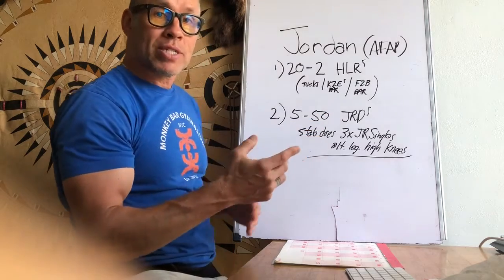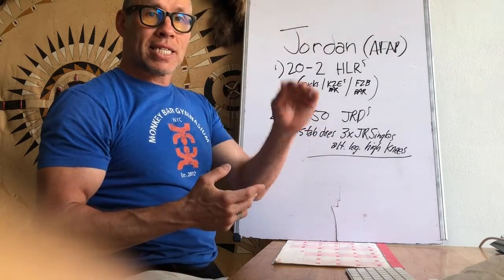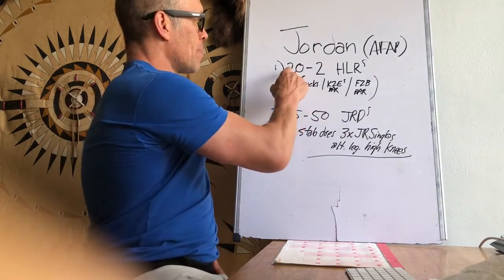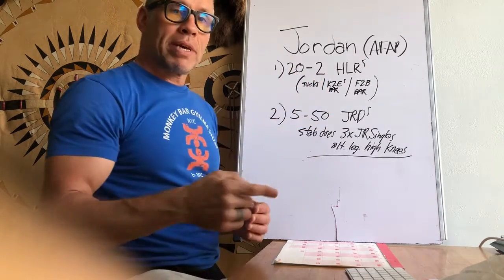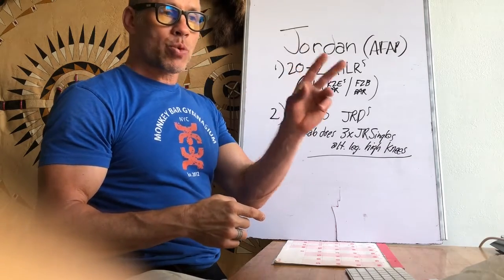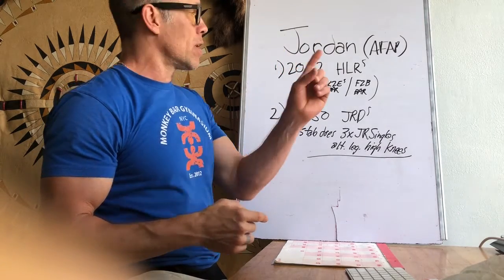You're gonna do it as fast as possible. It's what's called an ascend-descend, which means in this particular exercise you're going to descend in reps. You're gonna go from 20 to 2, which means even numbers only: 20, 18, 16, etc., down to 2.